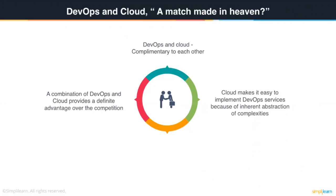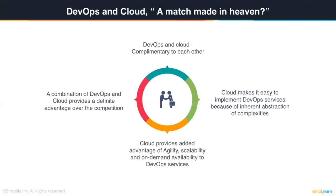Cloud actually makes it easy to implement DevOps services because of the inherent abstraction of complexities. You don't need to bother about whether your tools are going to be integrated or not, or whether you have written glue code. You have all the framework ready in front of you and you just need to get up and rolling with your DevOps implementation. Working on cloud is always less complex than implementing DevOps on a traditional on-premise data center. Cloud also gives you the added advantage of agility, scalability, and on-demand availability, which are things that come naturally with cloud and help your DevOps implementation.